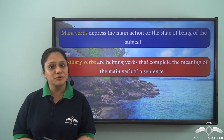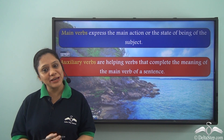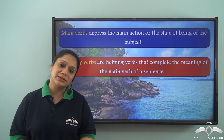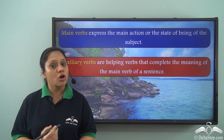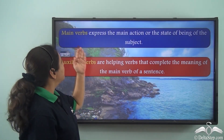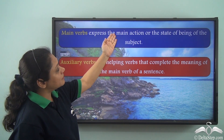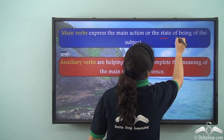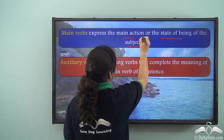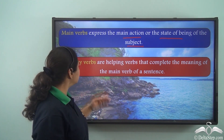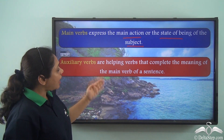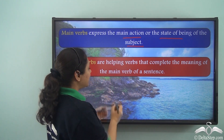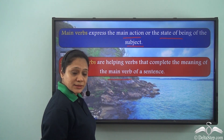We have learnt about verbs in great detail and we already know that verbs can act as main verbs or as auxiliary verbs. Main verbs express the main action or the state of being of the subject, whereas auxiliary verbs are helping verbs that complete the meaning of the main verb of a sentence.